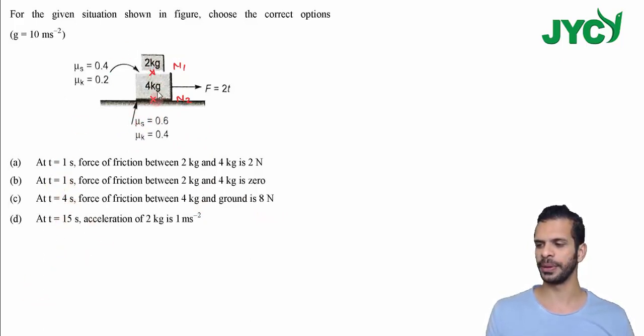Now we have to solve this question. We have to analyze this question. Here we have 2 kg and 4 kg block. Now n1 is the value. Here we have 2 kg and 4 kg, so let's draw the FBD.